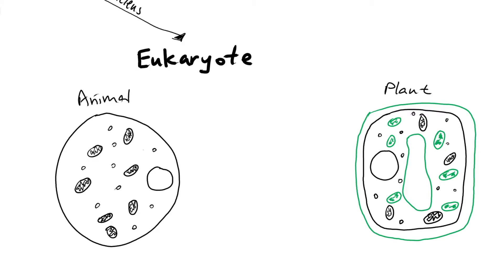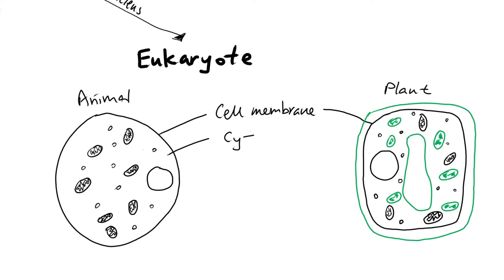On the left we have an animal cell, on the right a plant cell, and they actually share certain organelles. First, they both have a cell membrane — every single cell needs one because that keeps all of the content inside and controls what goes in and out, making it selectively permeable. They also both have cytoplasm inside, which is where chemical reactions take place and holds all of the organelles within the cell.